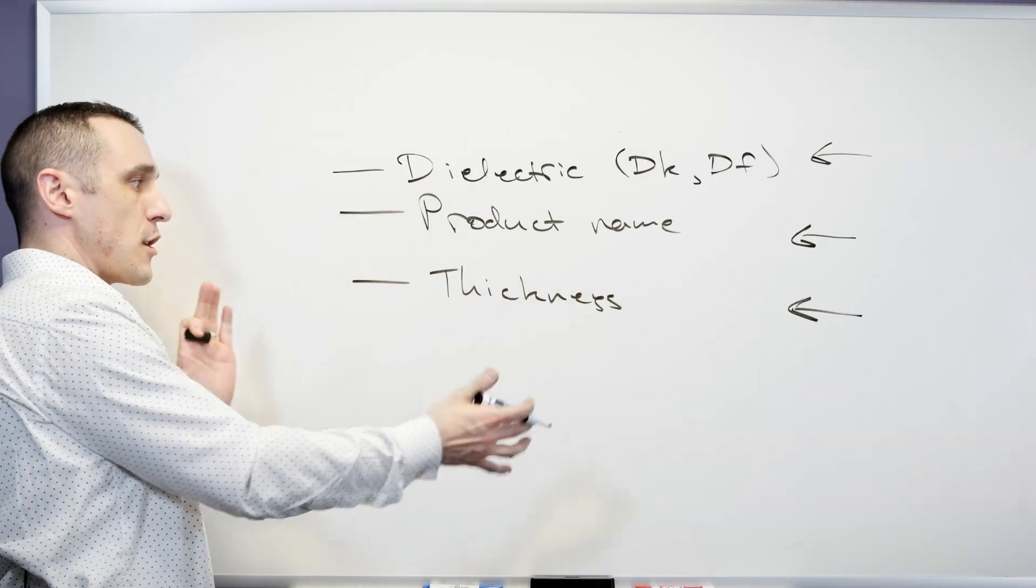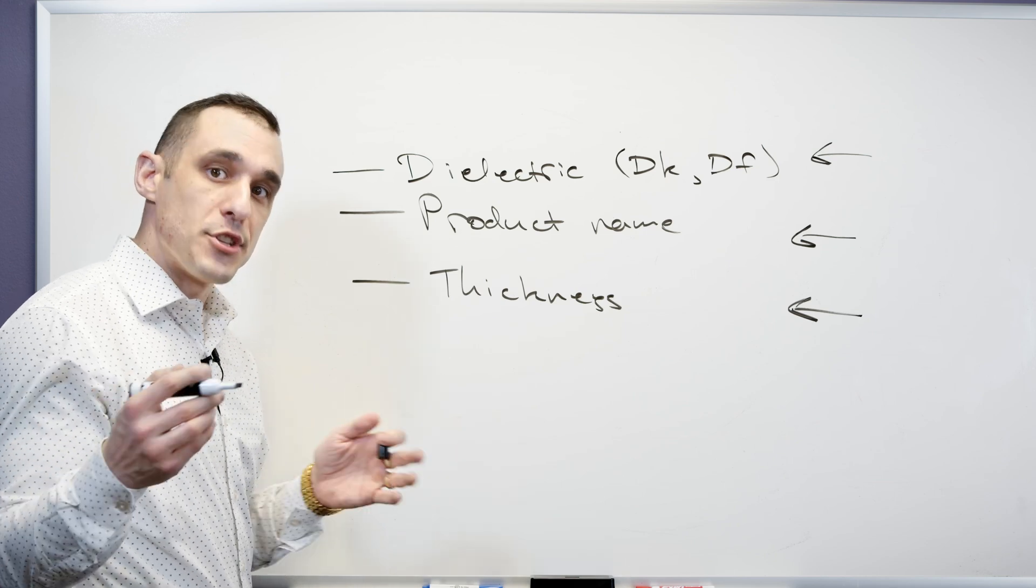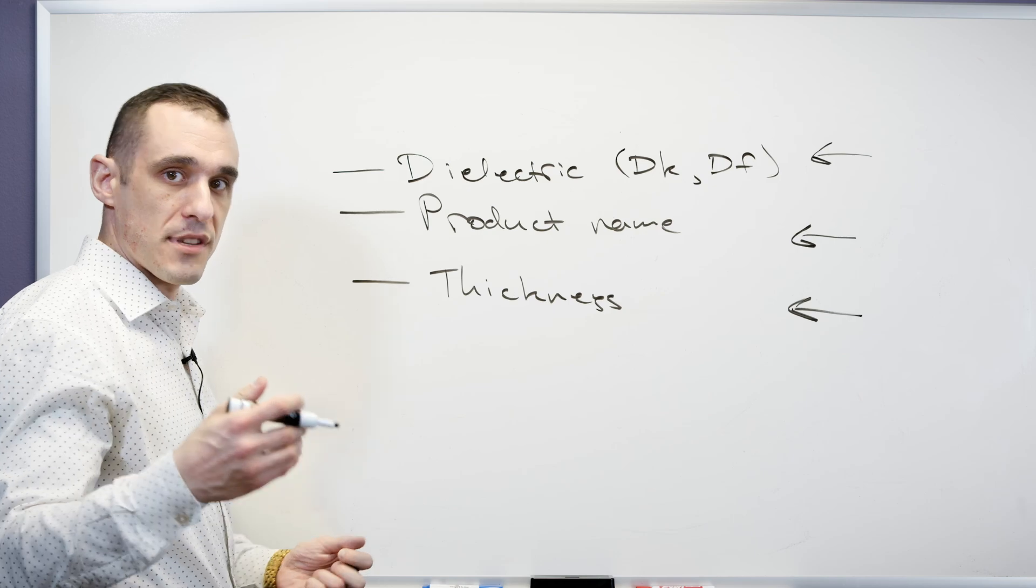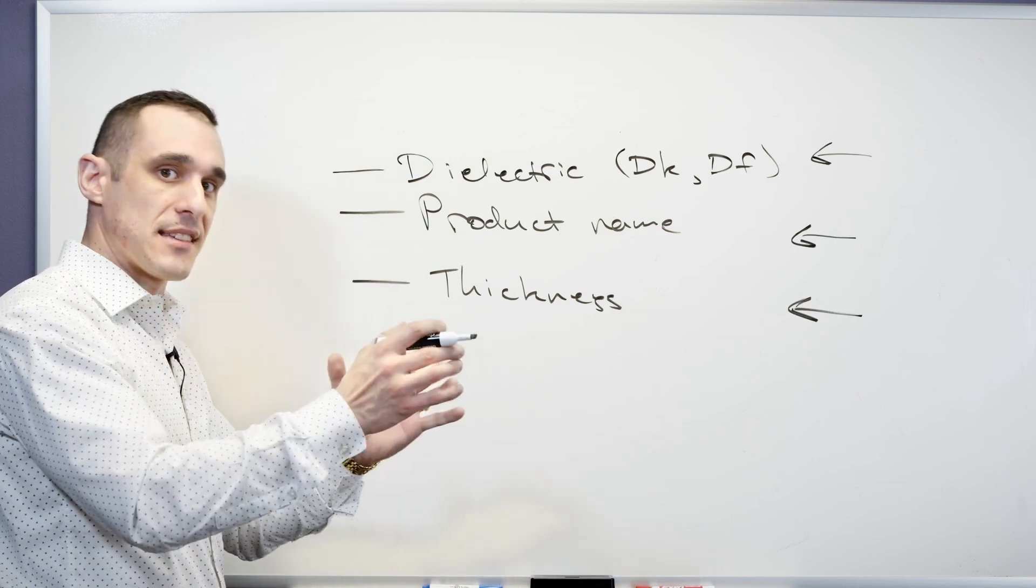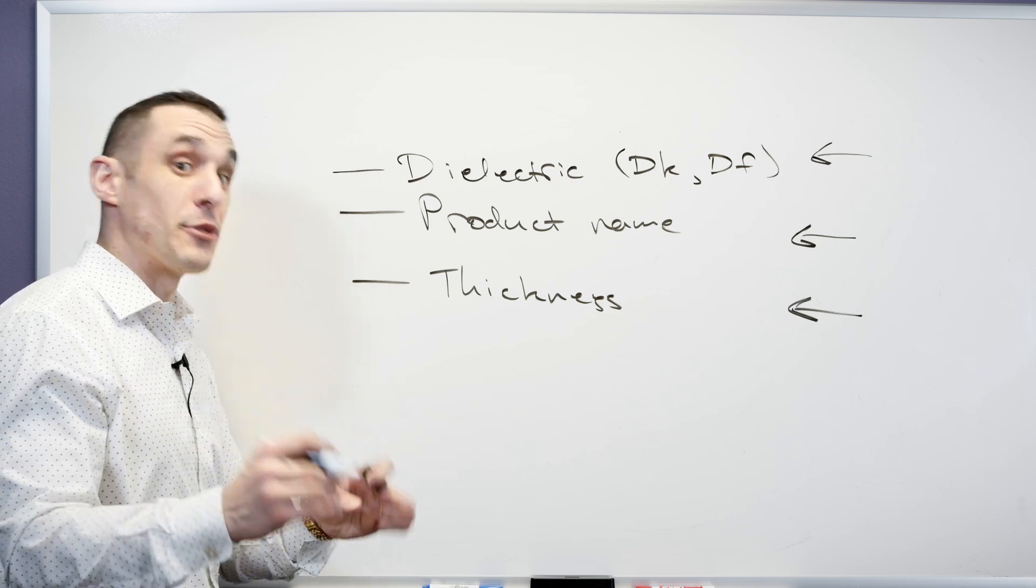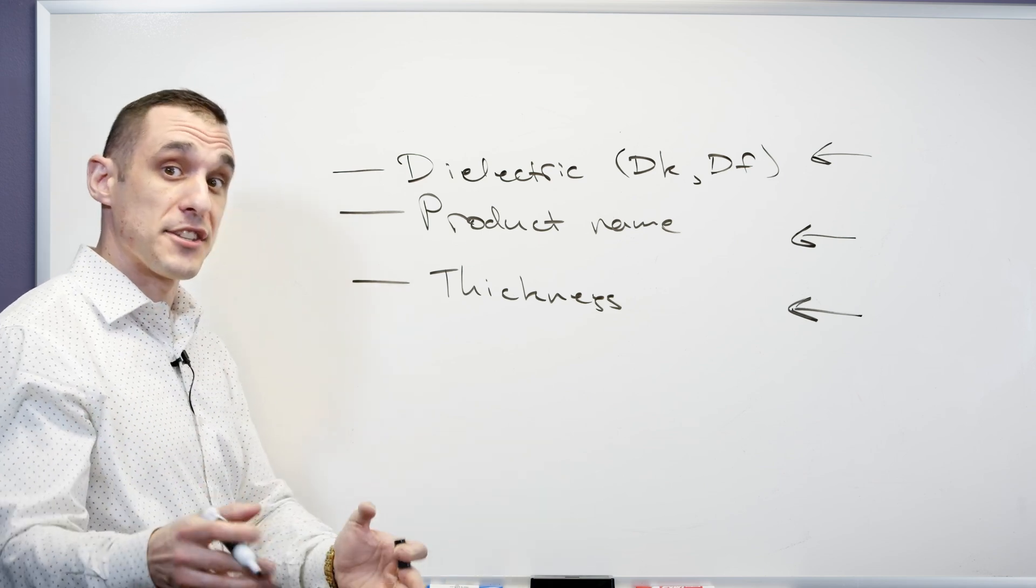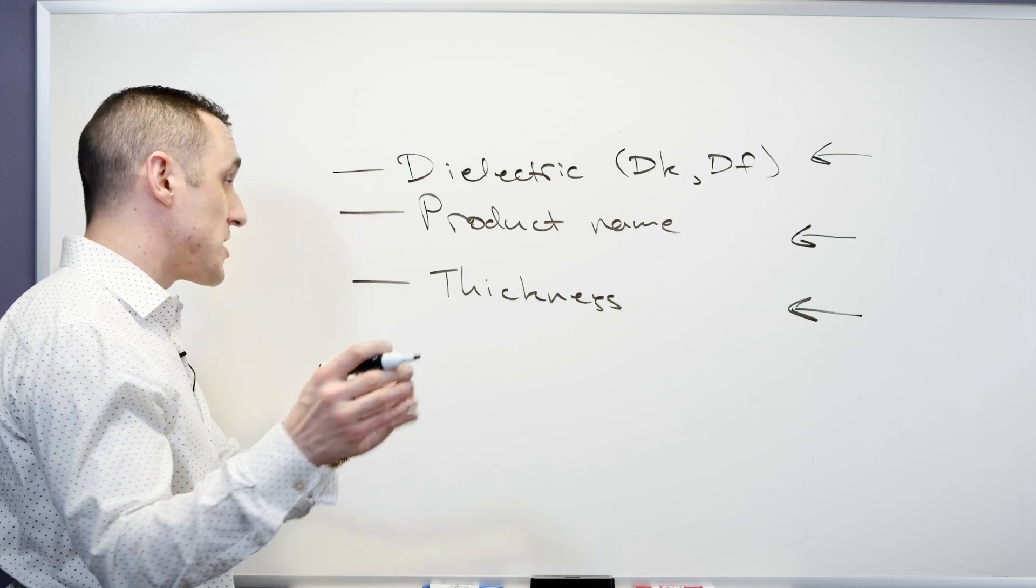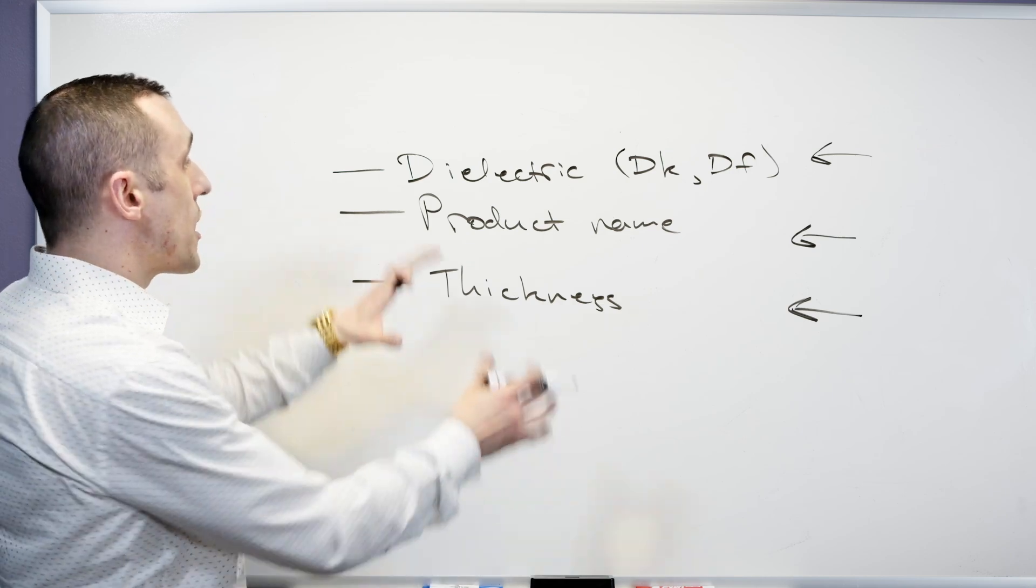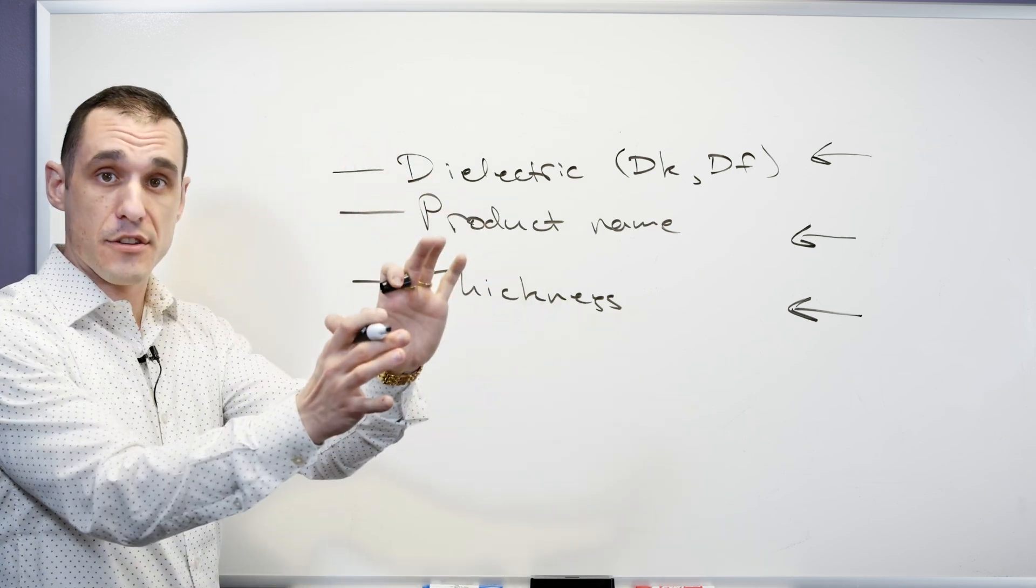Once you've gathered all of this information then you would need to compile it into a table. If you're using Altium or some other tools this can actually be found inside of the native design files. The problem is that manufacturers generally don't look at your native design files unless you're hiring them to do engineering work for you. So instead you need to actually give them a stack-up table if you want specific dielectrics in your stack-up.